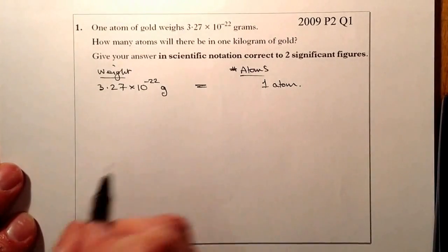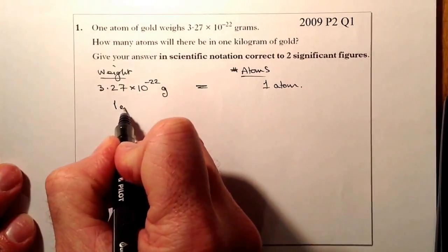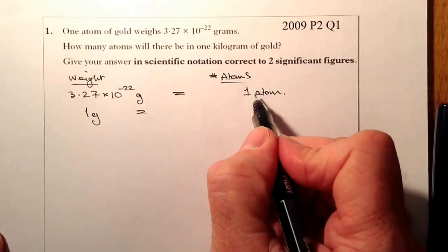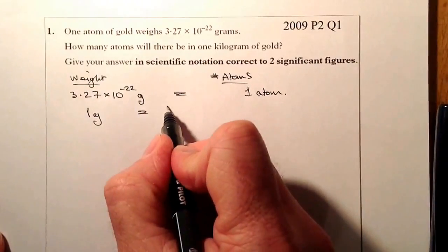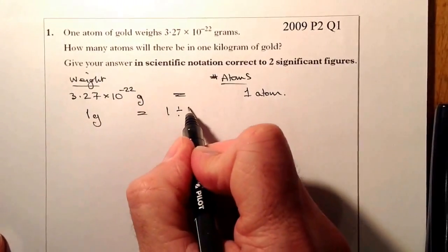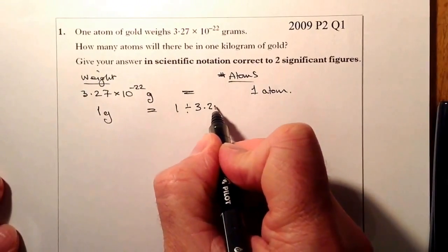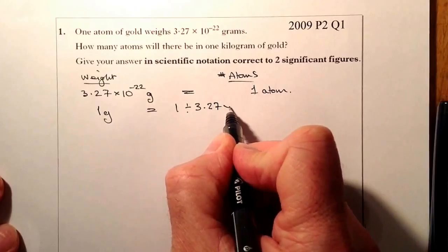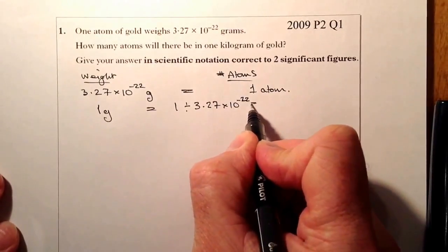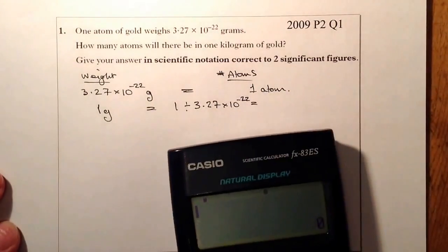So if I find out what one gram is, one gram is going to be equal to one divided by the weight of that one atom. Let's go for that in the calculator.